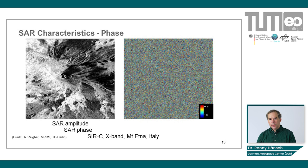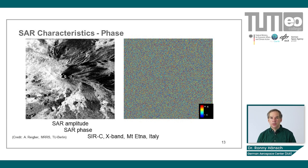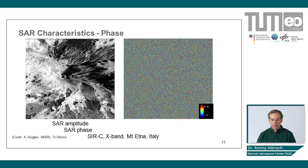If you look at the phase of the signal, as shown on the right-hand side of this slide, it looks basically completely random. As mentioned, it's not truly random — it's a chaotic signal — but there is no useful information in the phase of a single SAR image.